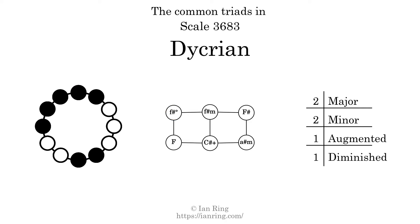Here is a Hamiltonian path of parsimonious voice leading that uses all the triads.